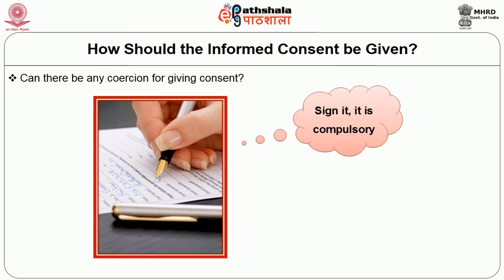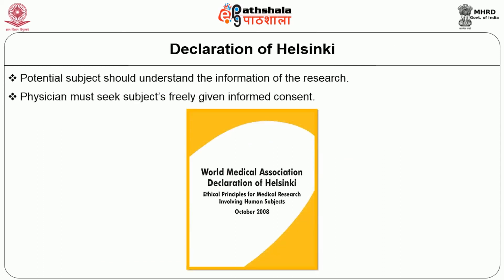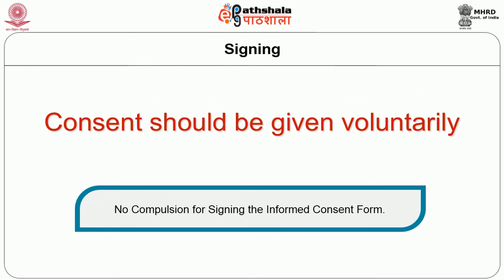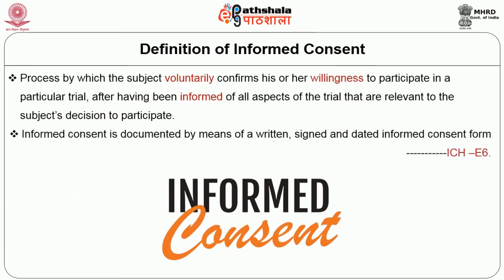The Declaration of Helsinki has made it compulsory — it is the physician's or investigator's responsibility to do this. It has to be given voluntarily, without any compulsion. As per the ICH GCP, it is a process by which the subject voluntarily confirms his or her willingness to participate in a particular trial or research, after being given information relevant to their decision to participate. The informed consent has to be documented by means of a written, signed, and dated informed consent form. So 'informed' means you give them enough information in a simple language which they understand, and then they give consent and sign.